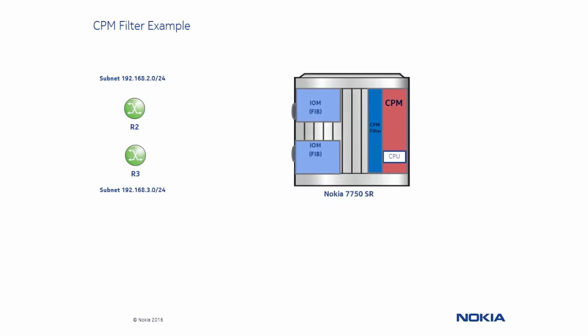Here is a CPM filter example. The network operator has decided to allow OSPF adjacency from router R2 subnet but deny access to router R3 subnet. We can see that router R2 sends an OSPF flow packet to the Nokia 7750 service router. The 7750 service router sees that the packet is a control plane packet that needs to be processed and sends it to the CPM. The CPM filter checks and verifies it has an entry to accept any OSPF packets from router R2. The packet is processed, therefore starting the OSPF state machine.